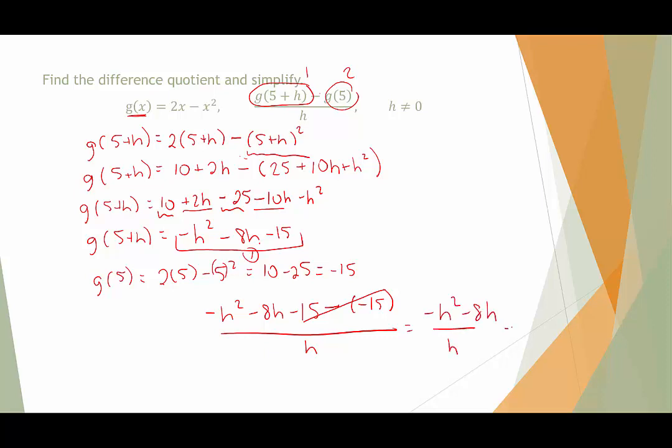All three terms are divisible by h, leaving us with negative h minus 8. And that would be the difference quotient for this example.